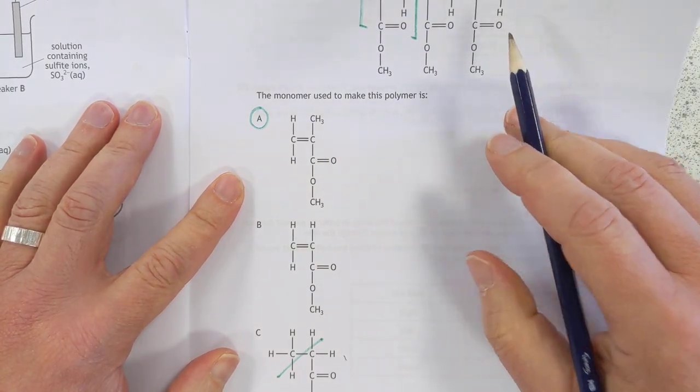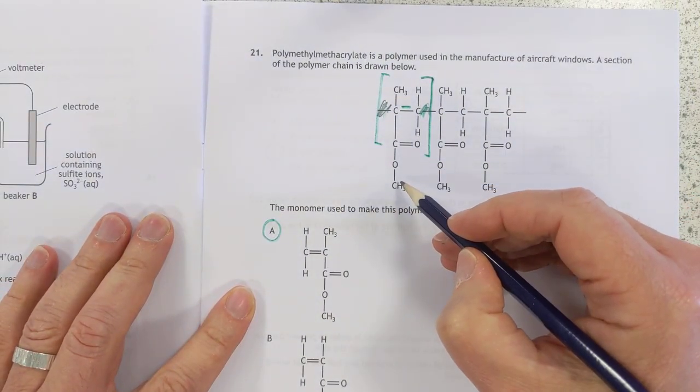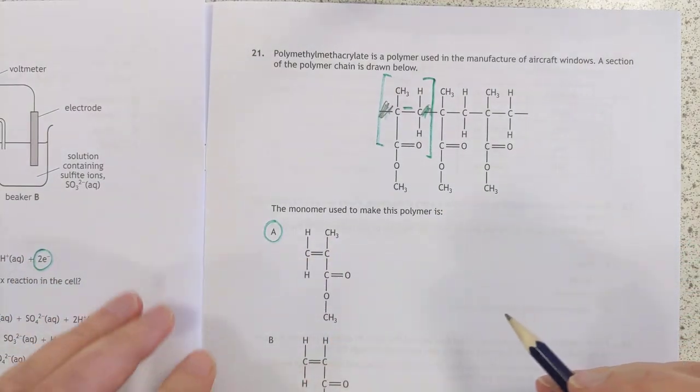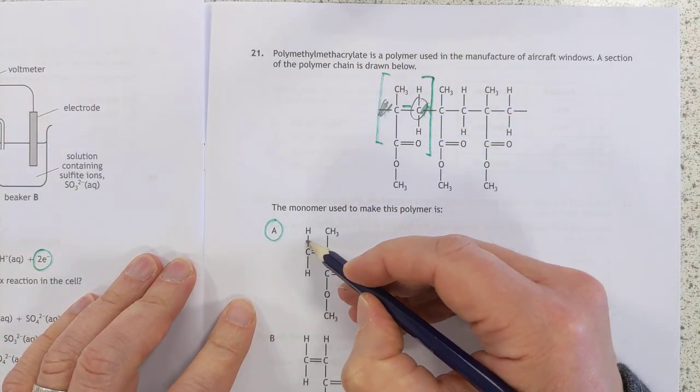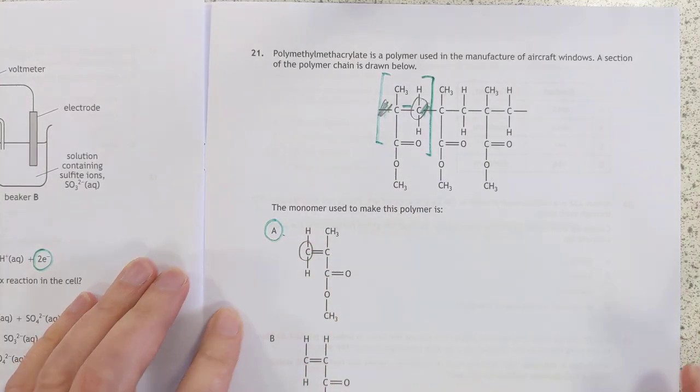Which leaves you with these two. And of course, in best SQA tradition, they've taken this repeating unit and they've flipped it round the other way. So this carbon here is this carbon here. But the answer is still A.